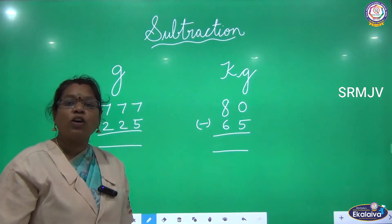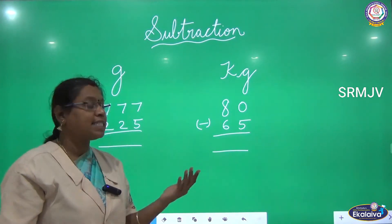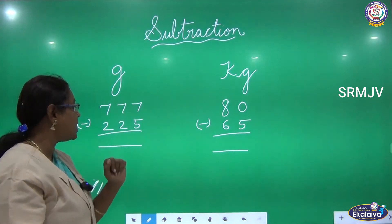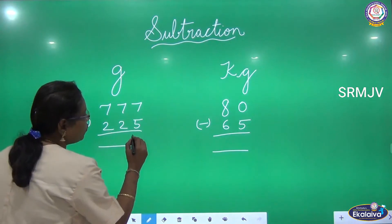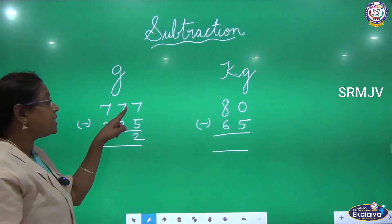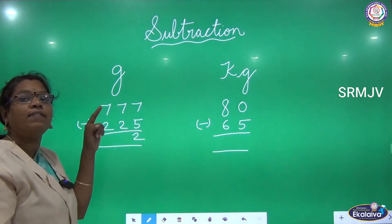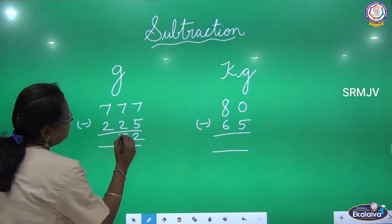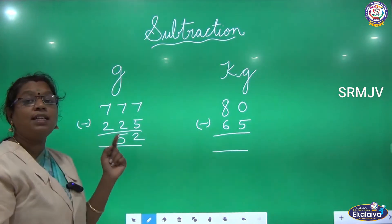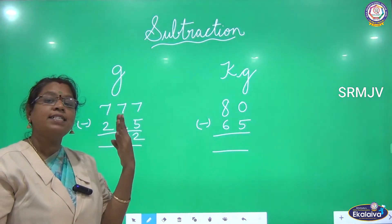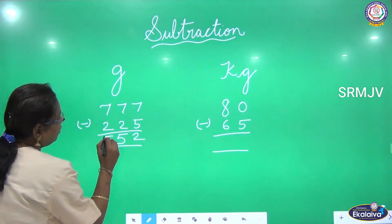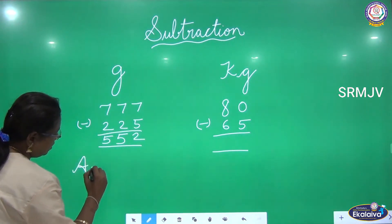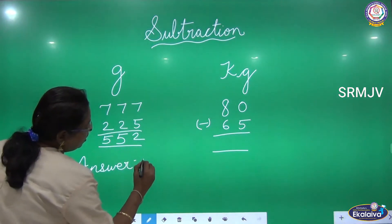For subtraction we also start from the ones place — from the right side. For 777 grams minus 225 grams: after 5, count to 7 — that is 6, 7 — so 2 fingers. Next, 7 minus 2: after 2, count to 7 — three, four, five, six, seven — so 5 fingers. Again 7 minus 2 gives 5. When we subtract 225 grams from 777 grams, we get 552 grams.